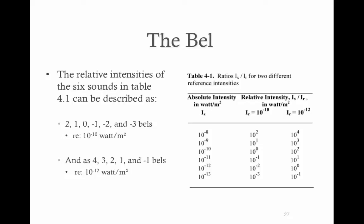Going back to our figure before, we have our absolute in the left column, and then we have two different references, 10 to the negative 10 and 10 to the negative 12. We're forming a ratio to find a relative level. Our relatives, if the reference is 10 to the negative 10, are now 2, 1, 0, negative 1, negative 2, negative 3.